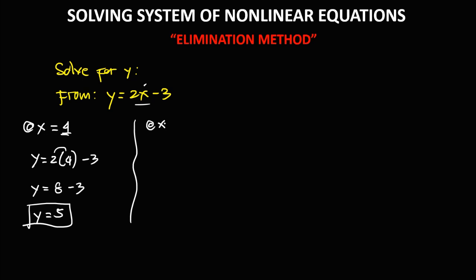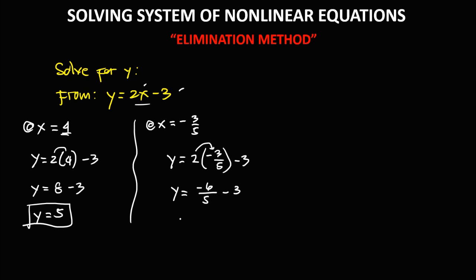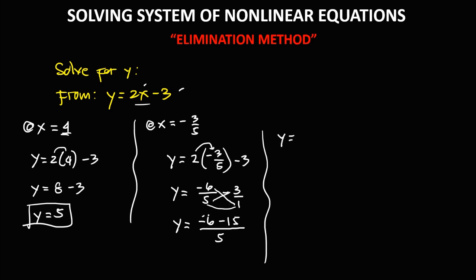For the other value, at x equals negative 3 over 5, substitute into y equals 2x minus 3: y equals 2 times (negative 3 over 5) minus 3, which gives negative 6 over 5 minus 3. Using cross multiplication, this becomes (negative 6 times 1 plus 5 times negative 3) over 5, which is (negative 6 minus 15) over 5, giving y equals negative 21 over 5.